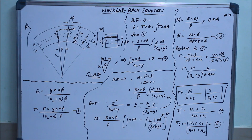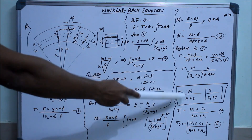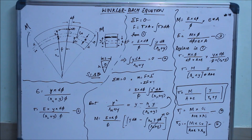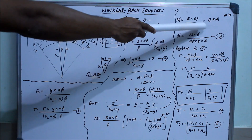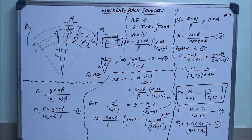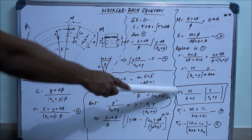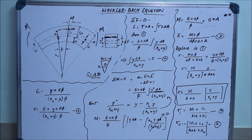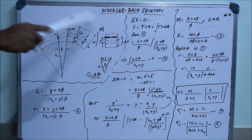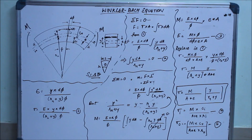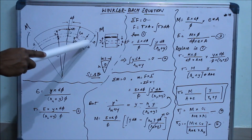When you substitute, phi/delta phi and the angles cancel, and you are left with the Winkler-Bach equation. It's a pretty simple equation — although the diagrams look complicated, once you understand the diagram and the key integral step, the derivation is straightforward. This is the general expression for bending stress in a curved beam.